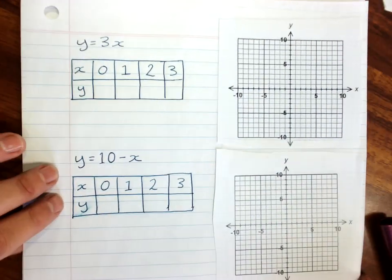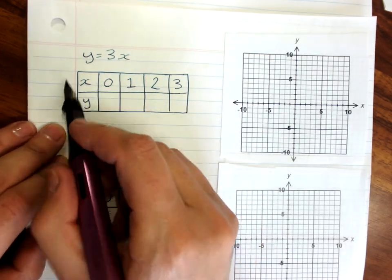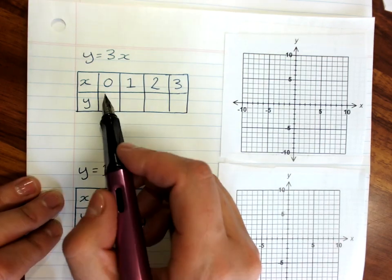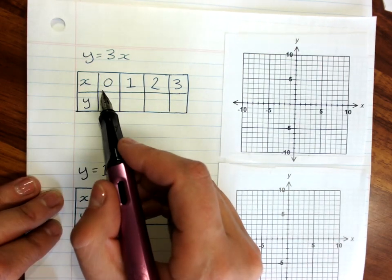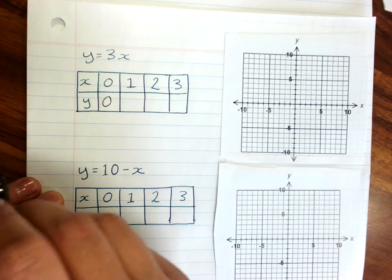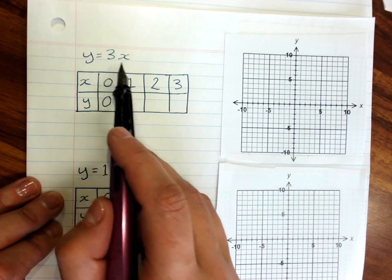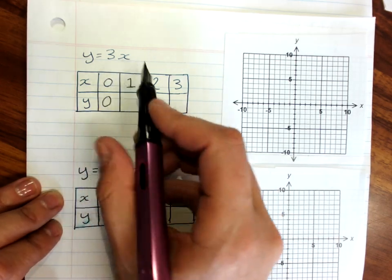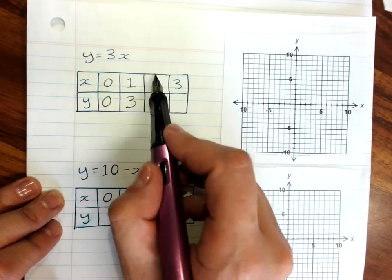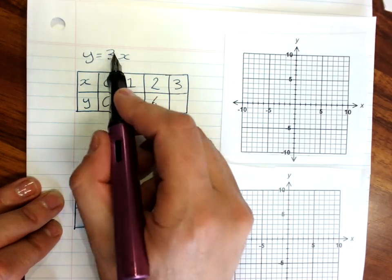So here's my first rule, y equals 3x. Now what we're doing is this is a table of values, and a table of values is kind of like a what-if table. What if I was zero minutes late? Well, when x is zero, 3 times zero is zero, I would get no detention at all. What if I was one minute late? Well, three times the amount late, 3 times x, when x is 1 is 3. So if I had one minute late, I'd get three minutes detention. When x is 2, 3 times 2 is 6. When x is 3, 3 times 3 is 9.